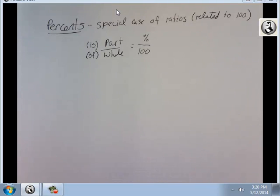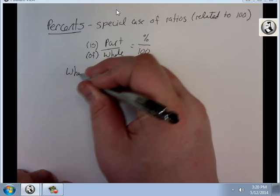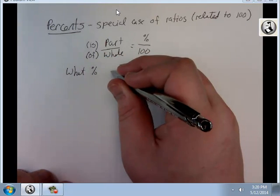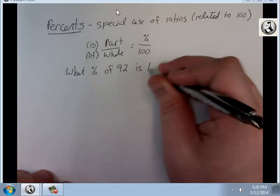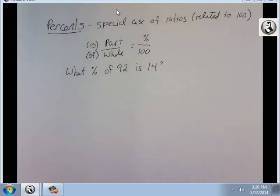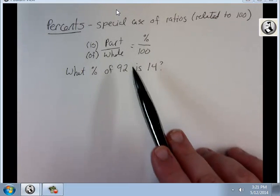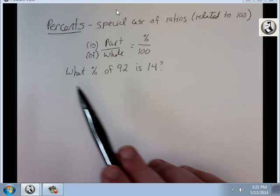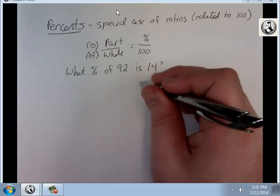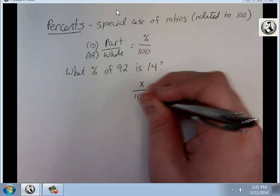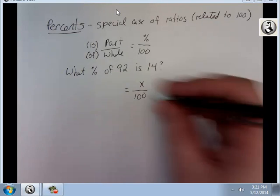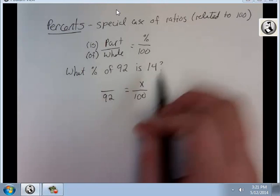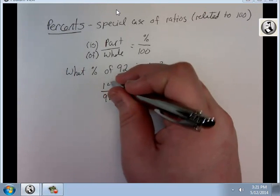Let's say we gave you this problem: what percent of 92 is 14? The first thing we've got to do is go back to our relationship. What percent — that's what goes where the percent sign is, 100 always goes below it, of 92 means 92 is my whole, is 14 — so 14 goes in the part position.